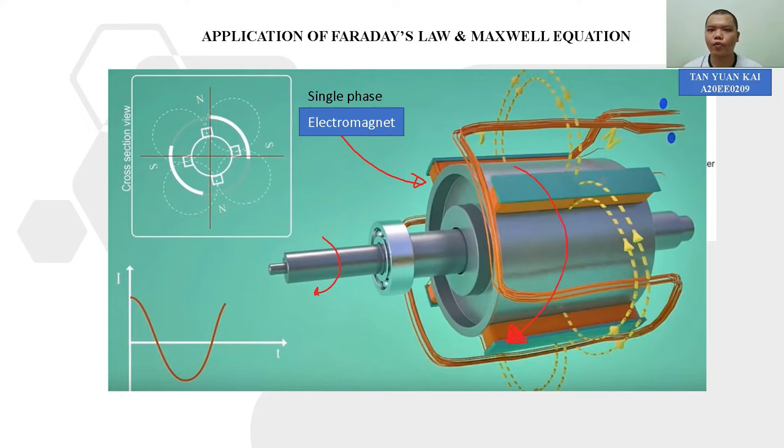The stator is made out of the copper coil with many layers. So if the rotor starts to rotate, means that the electromagnet starts to rotate. There is a cutting of magnetic flux occur. Then there is AC voltage to be produced.